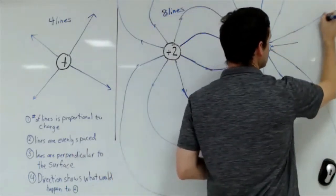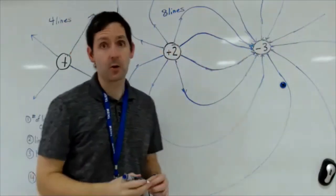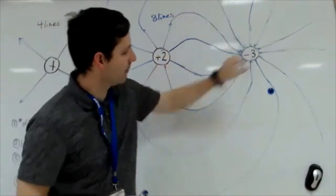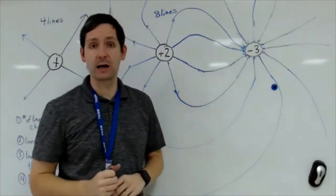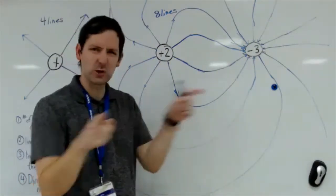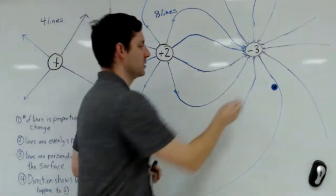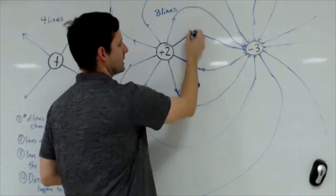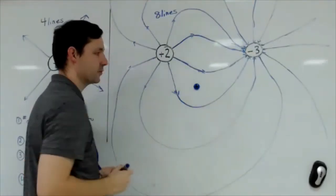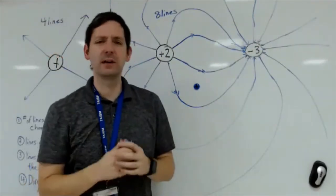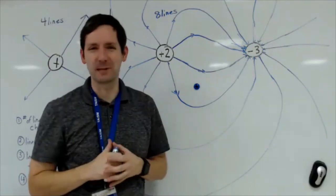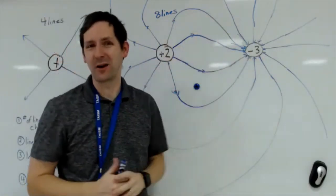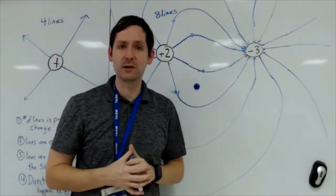Field lines should never, ever cross. If they crossed, it would mean a positive charge at that point could do two different things — and that's not the case. The lines connect and come back in, but they never cross. You can always add more arrows to remind yourself of the direction. That's the introduction to drawing electric fields and putting them together to understand what happens between multiple objects.